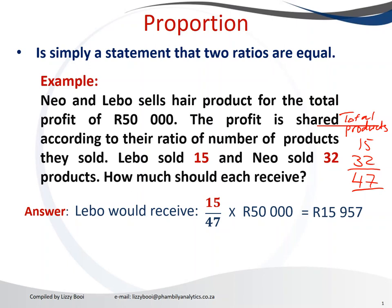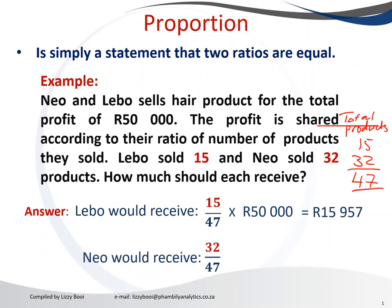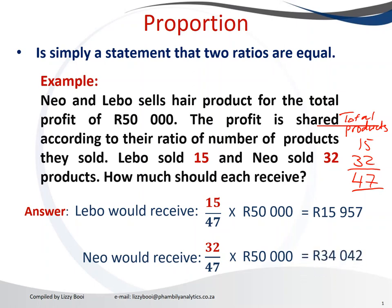Labo will receive 15,957 rand. We can do the same for Neu: the ratio for Neu to total products is 32 divided by 47, multiplied by 50,000. Neu will receive 34,042 rand. And they will both receive an equal proportion of the amount relative to what they sold.